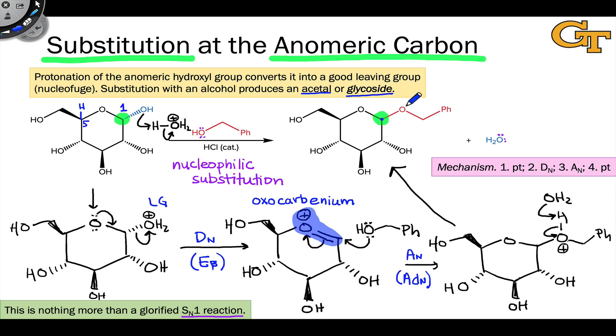Other types of nucleophiles can also react at the anomeric carbon. For example, aminals can form when nitrogen is the nucleophile, and sulfur-containing compounds can form when a sulfur atom is linked to the anomeric carbon.